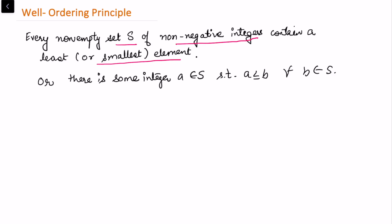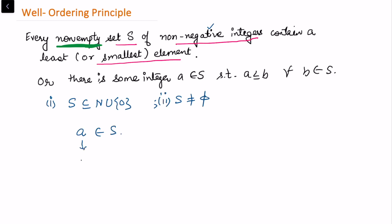Assuming this fact is true — that for every set of non-negative integers, if we can show that this set is non-empty, then we can say it has a smallest element. So while applying this Well-Ordering Principle, we are basically looking for two properties: that S is a set of non-negative integers (including zero), and that S is non-empty. Whenever we have these two properties, we can say that a is the smallest element in the set S.